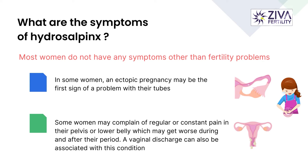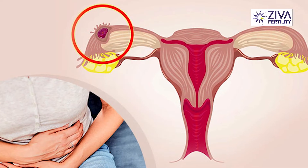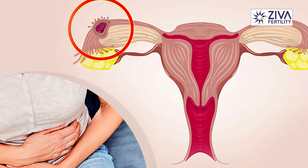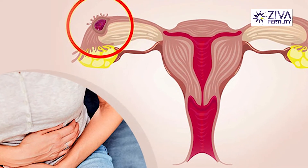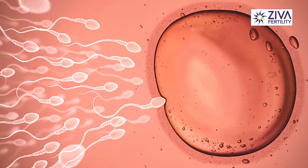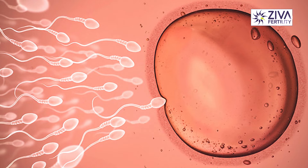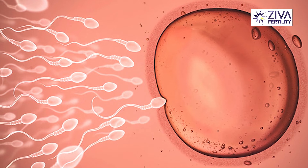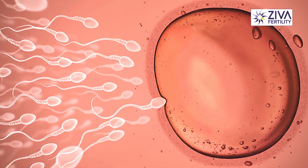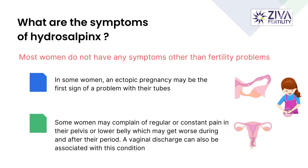Hydrosalpinx is also responsible for ectopic pregnancies. When the tube is blocked, if the egg is released and the sperm somehow fertilizes it, the embryo cannot travel back into the uterus to form a baby — therefore resulting in an ectopic pregnancy. Hydrosalpinx should be addressed in such conditions.